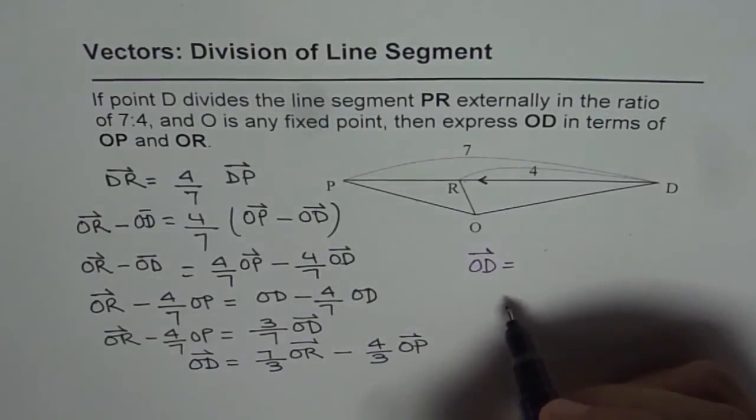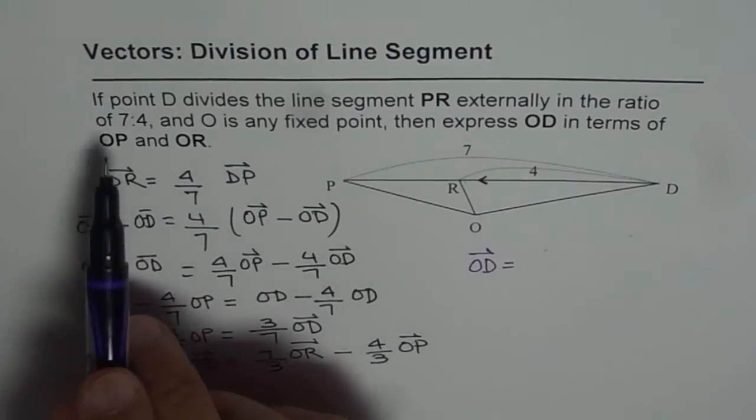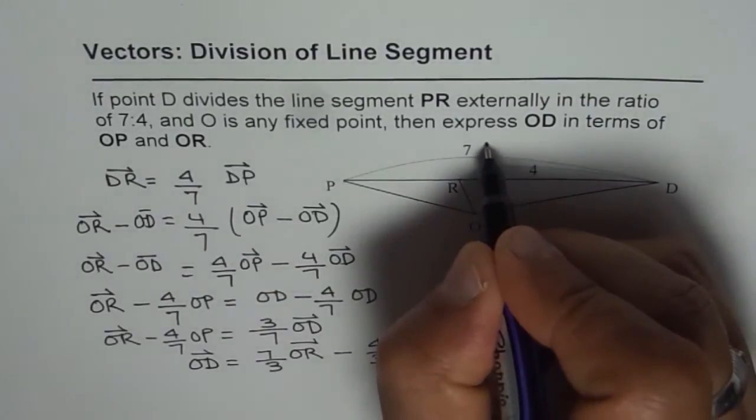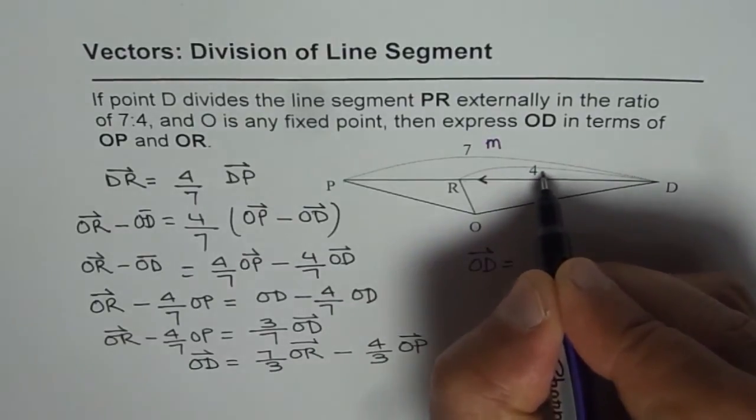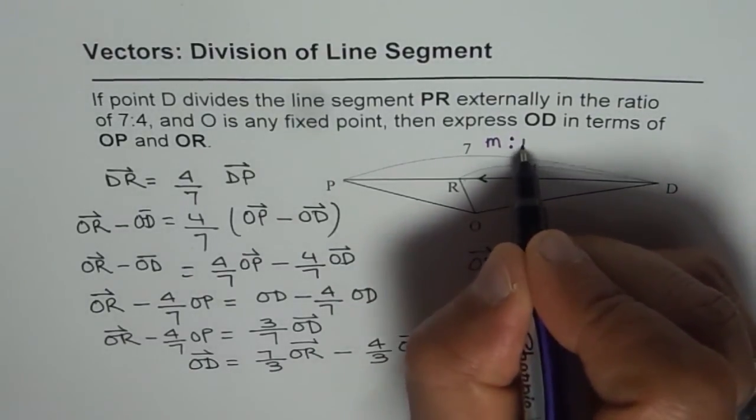Well, we can generalize this. So, let me say, if the ratio was M is to N. Let us say this was M and 4 was N for us. Let us say the ratio was M is to N.